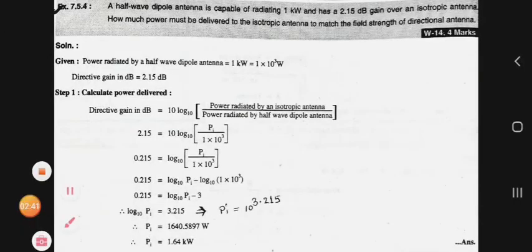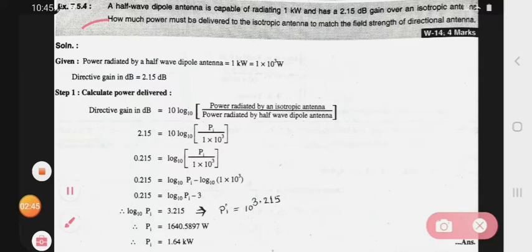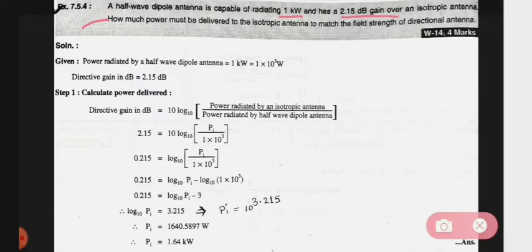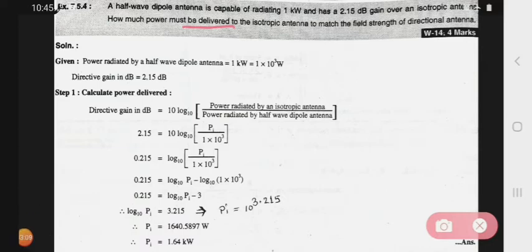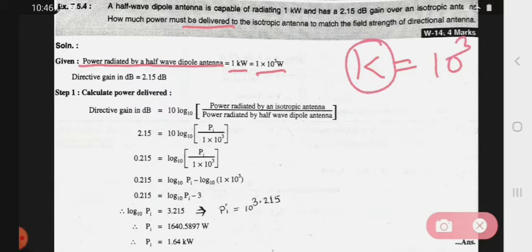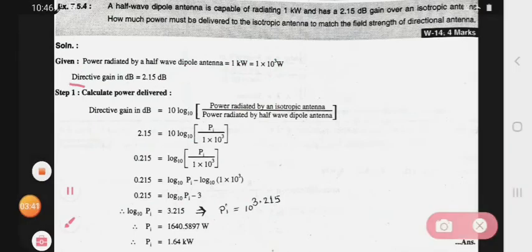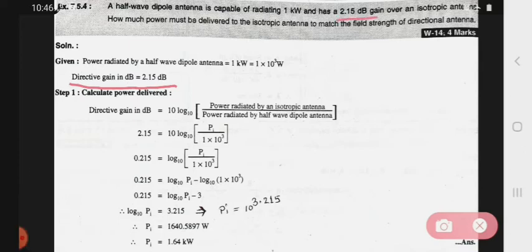Then see the next problem. The half wave dipole antenna is capable of radiating 1 kilowatt and has a 2.15 dB gain over an isotropic antenna. How much power must be delivered to the isotropic antenna to match the field strength of the directional antenna? The power radiated by the half wave dipole antenna is 1 kilowatt, converted into watt that is 1 into 10 raise to 3 watt. Then the directive gain in dB is 2.15 dB.